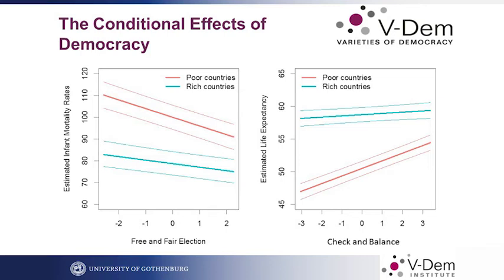In this graph, the x-axis is the level of quality of election, and the y-axis is the infant mortality rates. The blue line captures the relationship between the two in rich countries, and the red line captures the relationship in poor countries. We found that in general, the quality of election reduces infant mortality rates, but most interestingly, this effect is especially strong in poor countries.